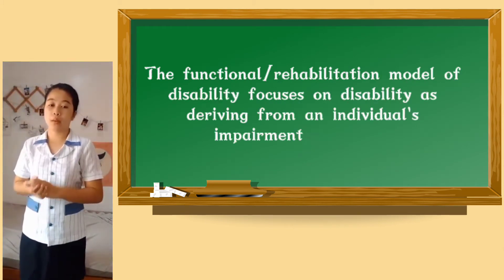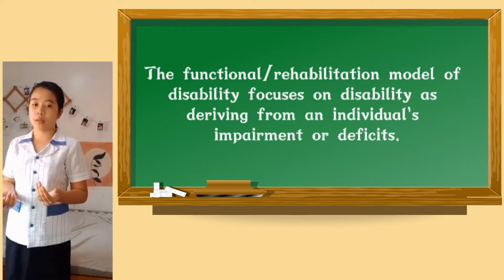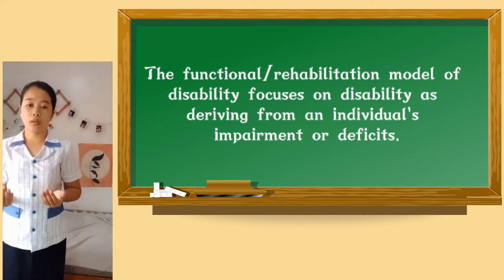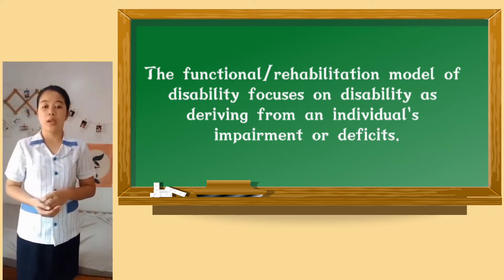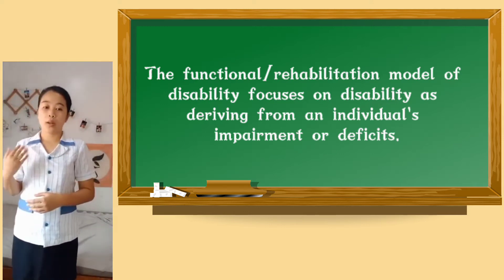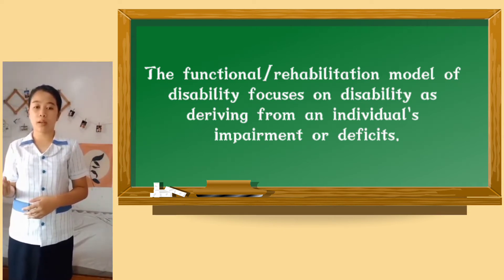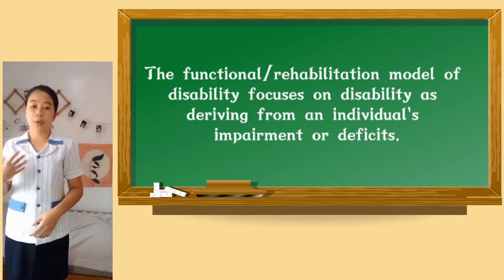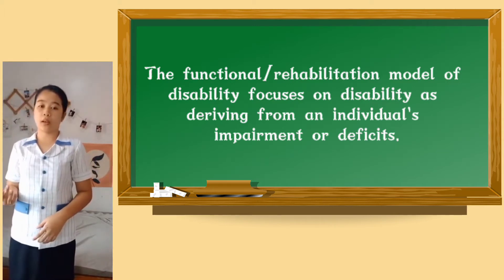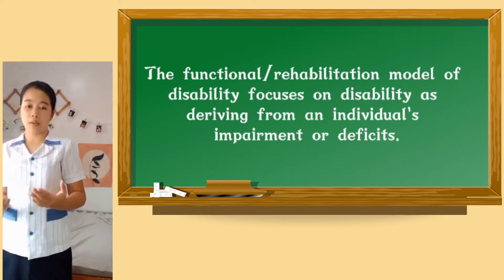This model of disability focuses on disability as deriving from an individual impairment or disease. Where this model differs from the medical approach is that while the source of the disability is individualistic and linked to medical, physiological, or cognitive impairments or deficits, the expression of disability is the inability to perform a number of functional activities.